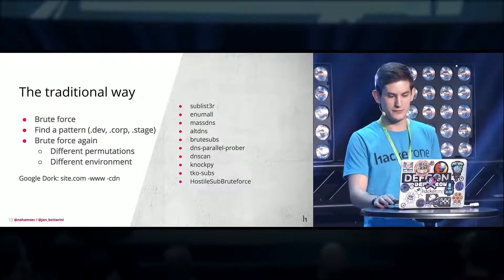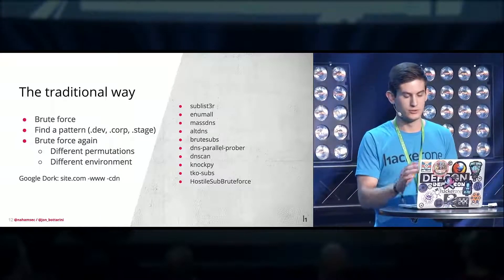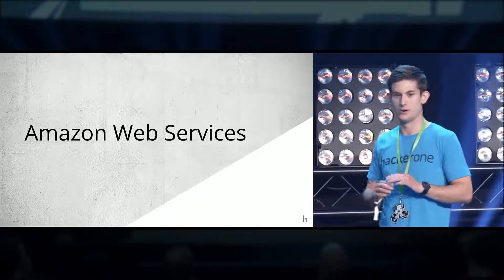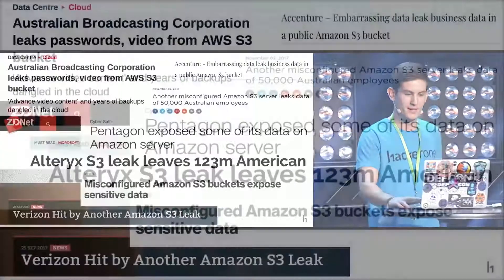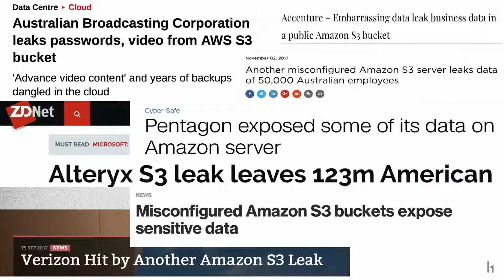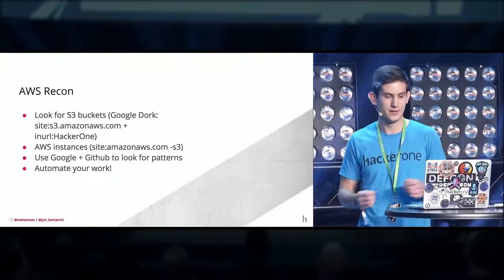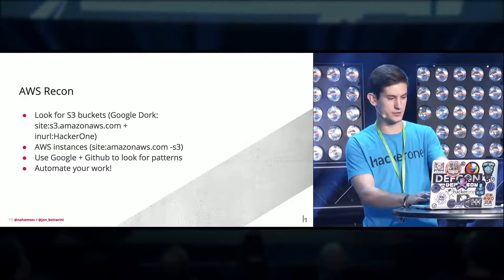Back to brute forcing — different permutations, different environments, there's a bunch of different tools you can use. Google is your friend. Amazon is really, really hard to secure — it's not their fault, they gave you all the tools to protect your assets, but sometimes people just don't do it. All of these leaks have happened pretty much within the last five months. When I'm doing recon, I'm looking for S3 buckets holding all the assets these companies have. You can use a simple Google dork — type in s3.amazonaws.com and then your target, like HackerOne, and it's right there.